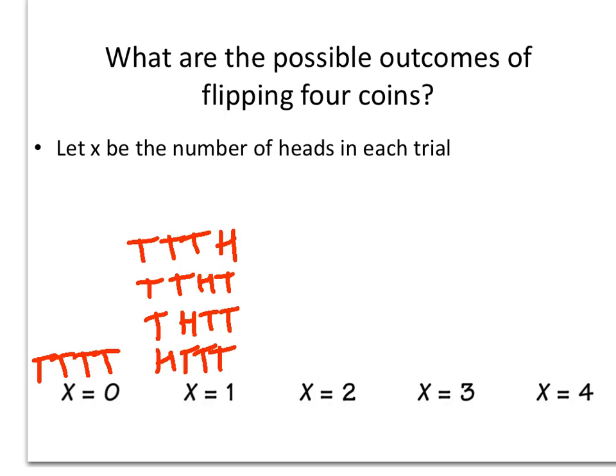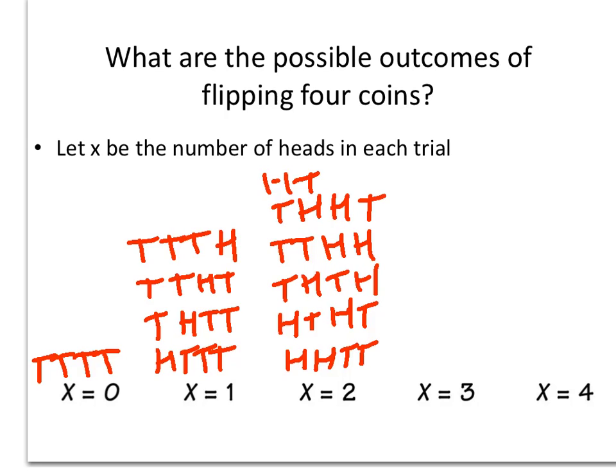For X equals two, there are even more opportunities to get two tails and one head. Trying to be as organized as I can, I'm going to go two heads and two tails, then heads tails heads tails, then tails heads tails heads. I'm not sure I'm being real organized here, but I'm just trying to list all the different ways of getting two heads here. What about tails heads heads tails, and heads tails tails heads. I'm not sure how organized that is, but you can see there are six different ways to get two heads and basically two tails.